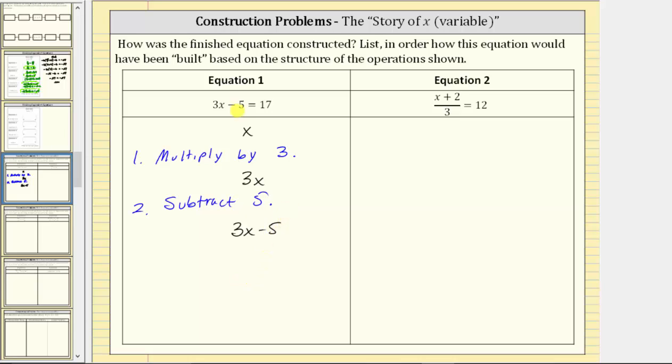Going back up to the equation, we have 3x - 5 = 17. So we know the result is 17, which gives us the equation 3x - 5 = 17.